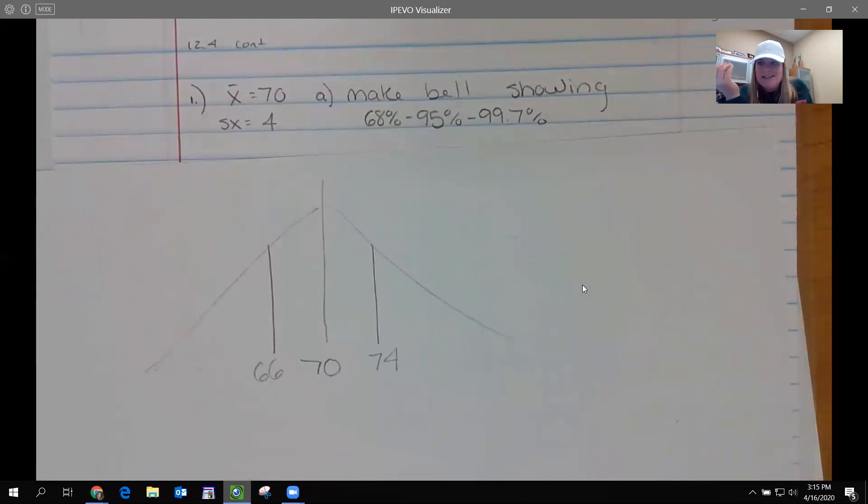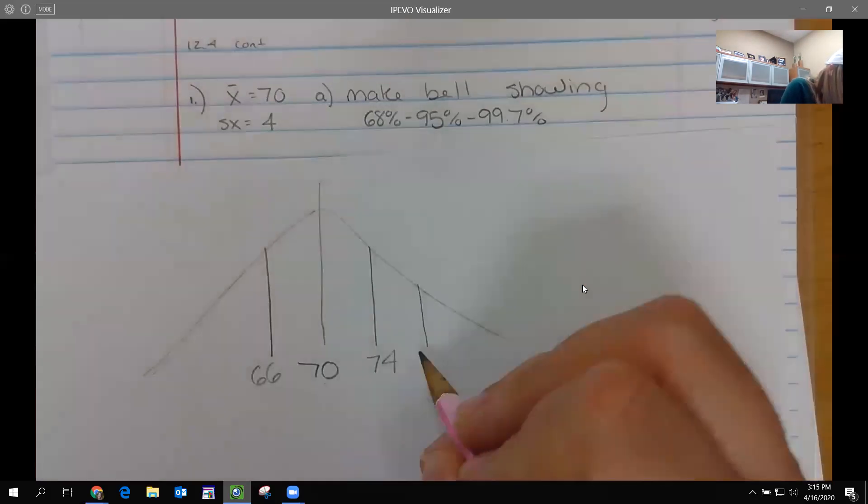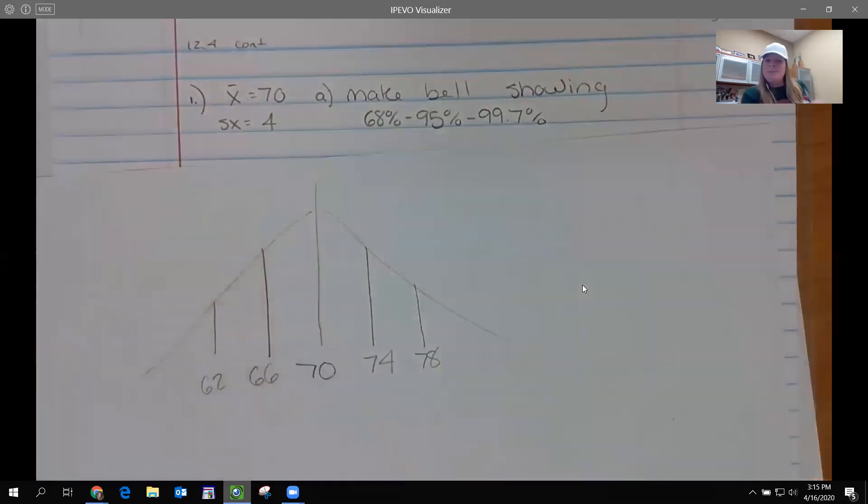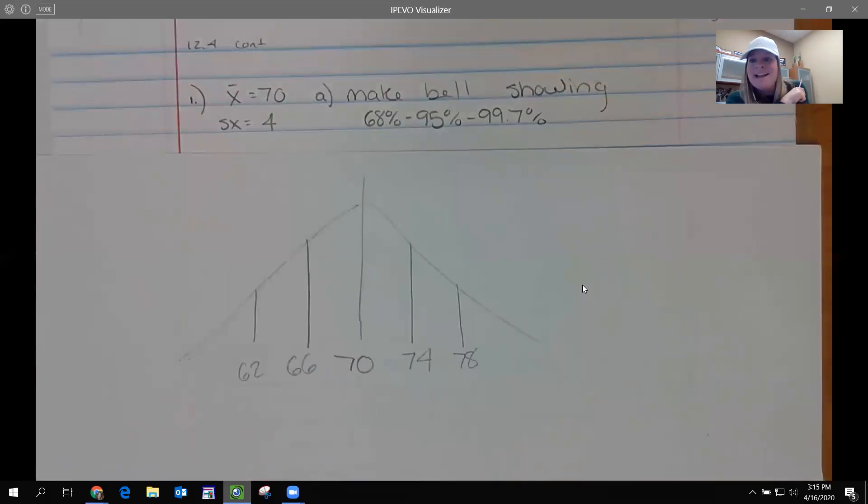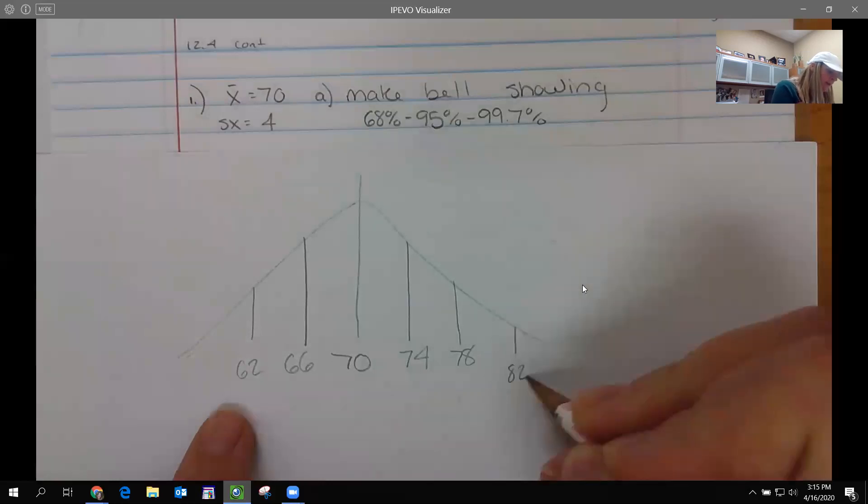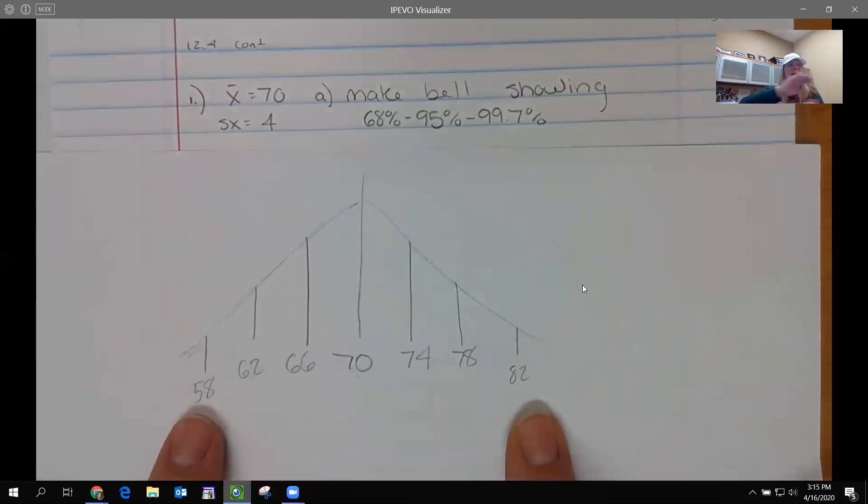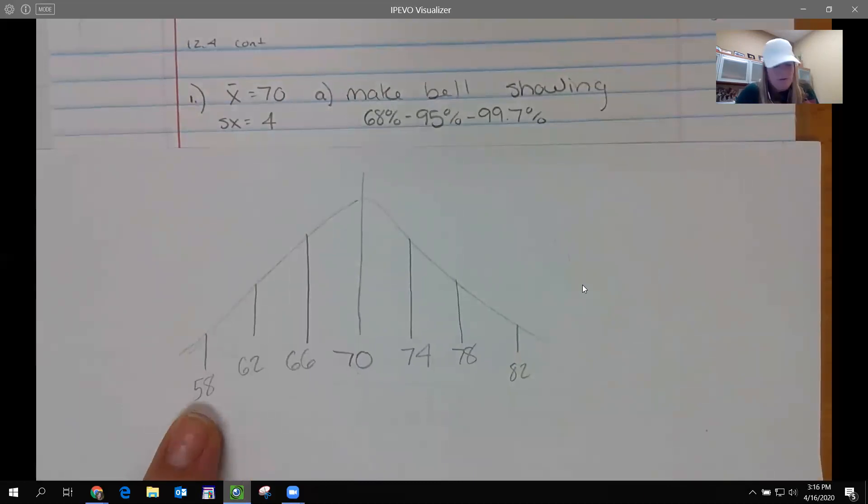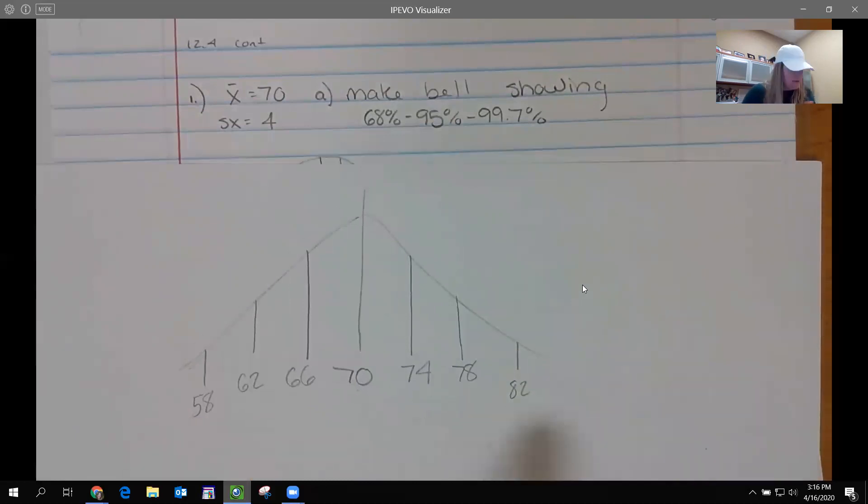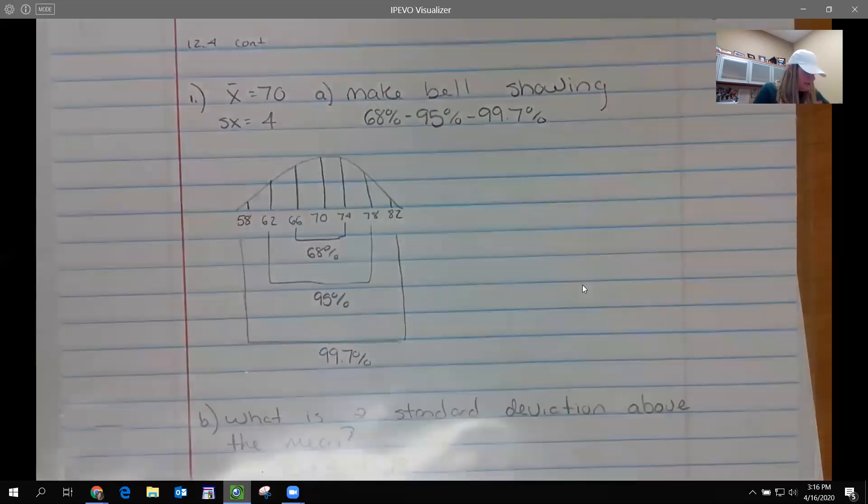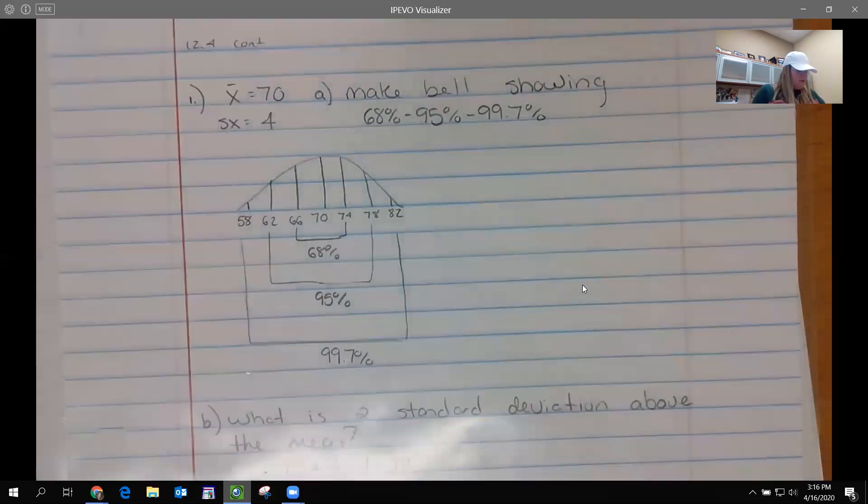What if I want to go up one deviation and down one deviation? I take 70 and I add four, 74. Take 70, subtract four, I get 66. That is one standard deviation. What percent of the people are between 66 and 74? 68%. So 68% of the people are between 66 and 74. Let's go up one more deviation. We add four, that gives me 78. Subtract four and I get 62. What percent of the people are between 62 and 78? 95%.